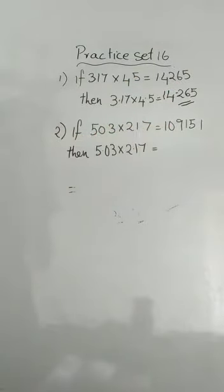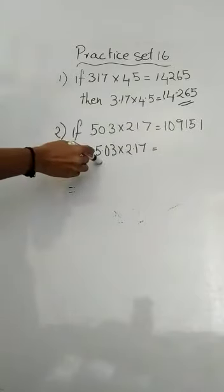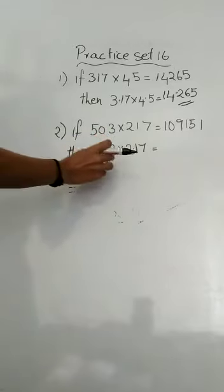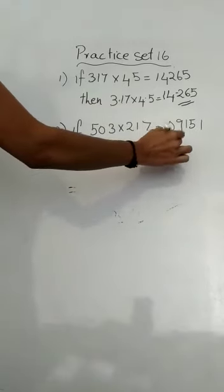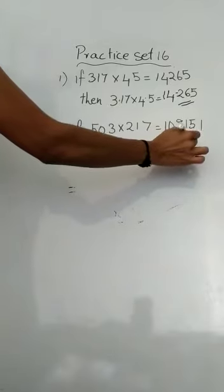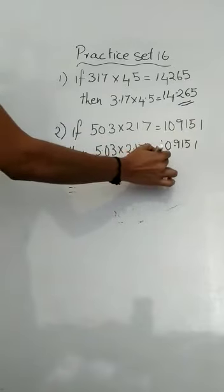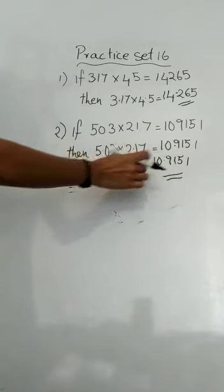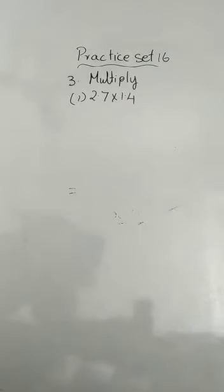In the same way, 503 into 213 is given. Then what is 5.03 into 2.17? Here you get 2 decimal places and here 2 decimal places, so total is 4. You write 109151 and put 4 decimal places, so the answer will be 10.9151. These are the first two questions.